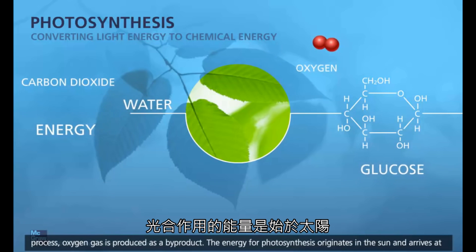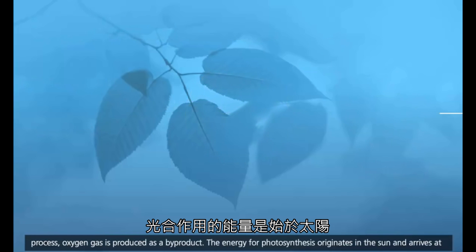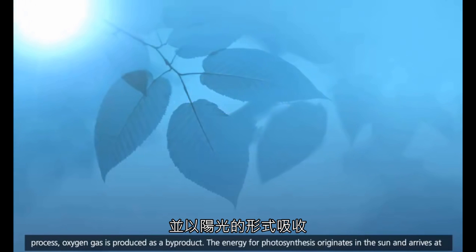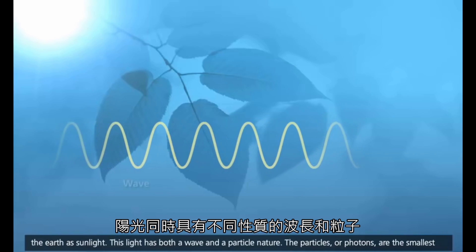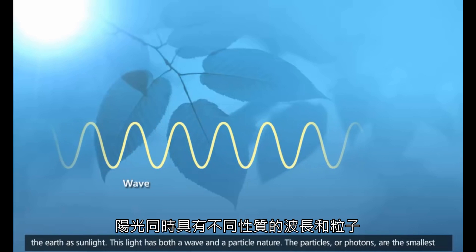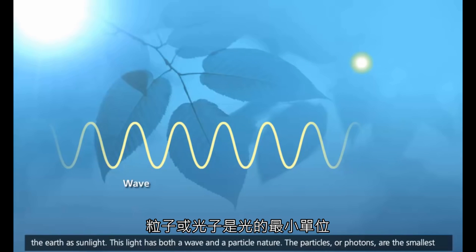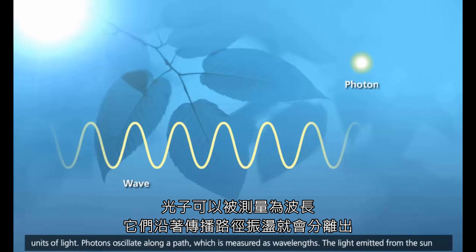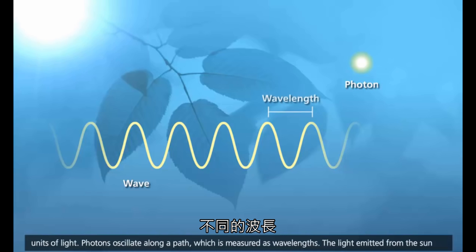The energy for photosynthesis originates in the sun and arrives at the earth as sunlight. This light has both a wave and a particle nature. The particles, or photons, are the smallest units of light. Photons oscillate along a path, which is measured as wavelengths.